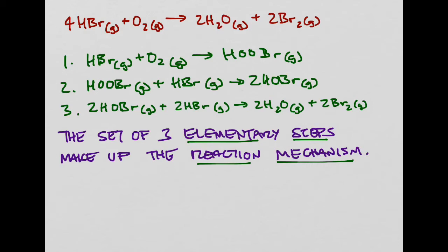Another important term: HOOBR and HOBR are called intermediate products, because they appear and are consumed within the mechanism but are not among the actual final products of the overall reaction.